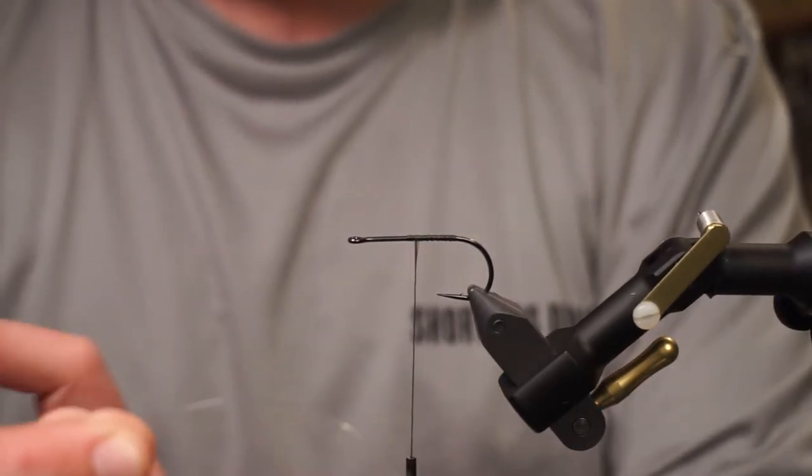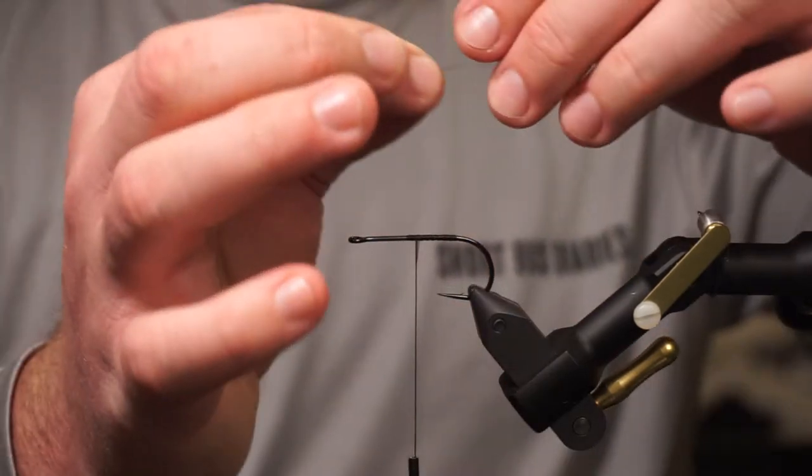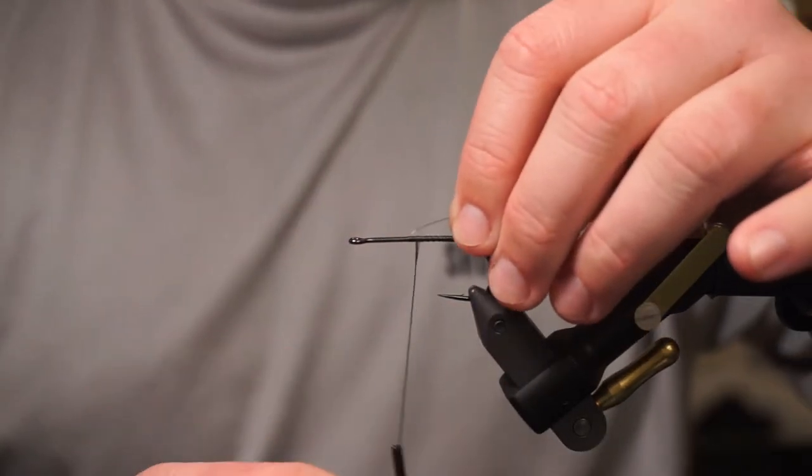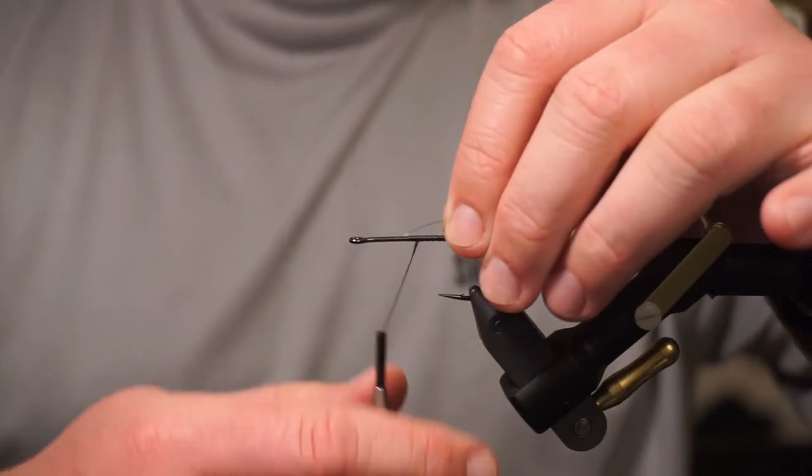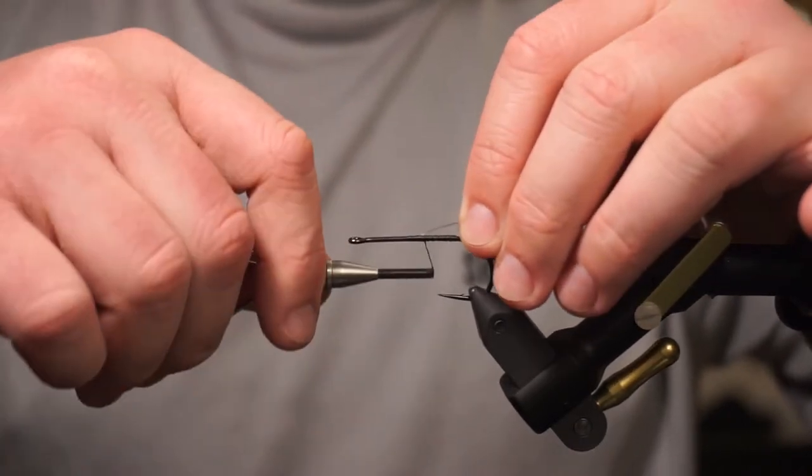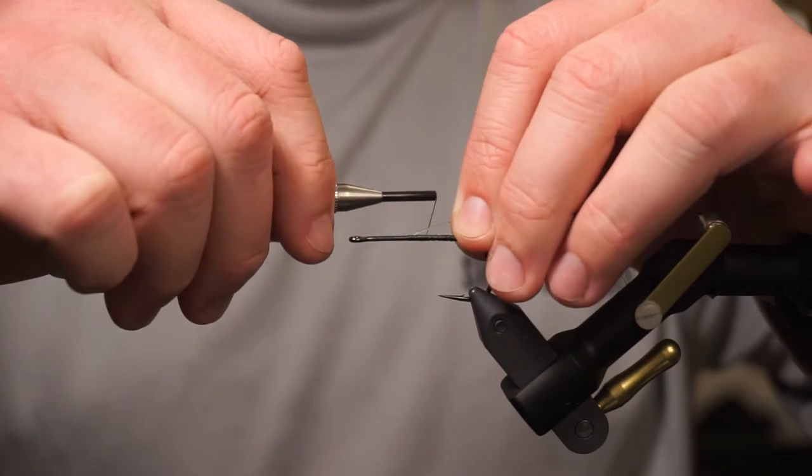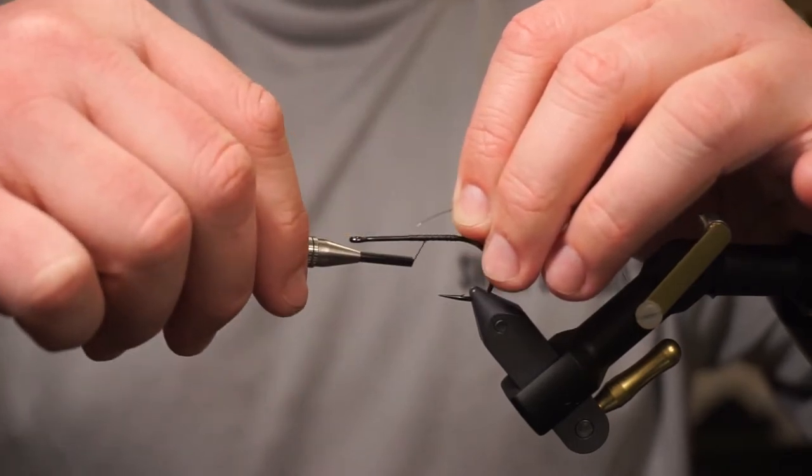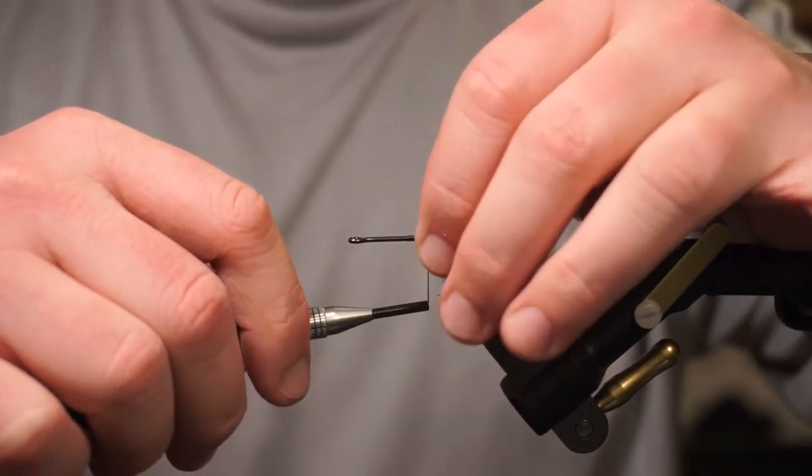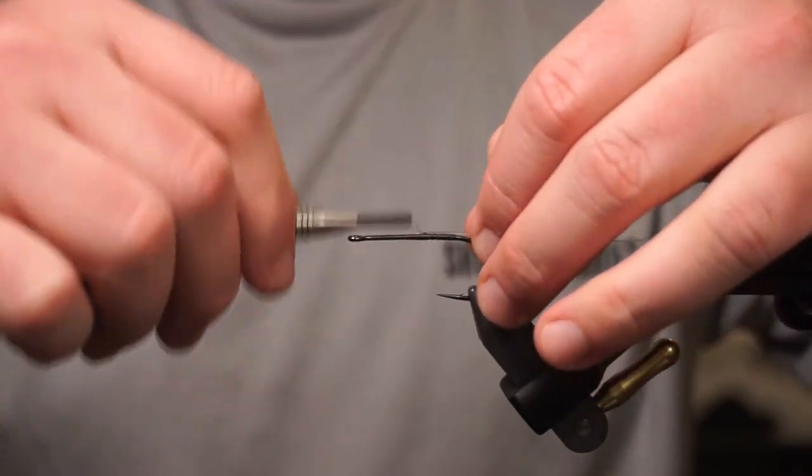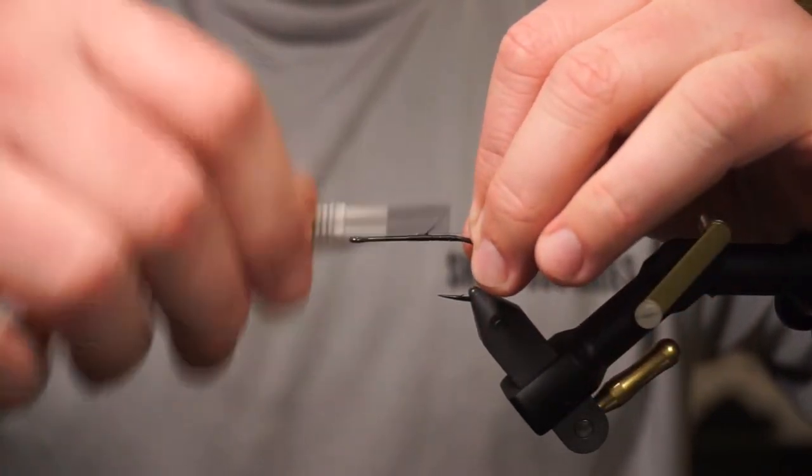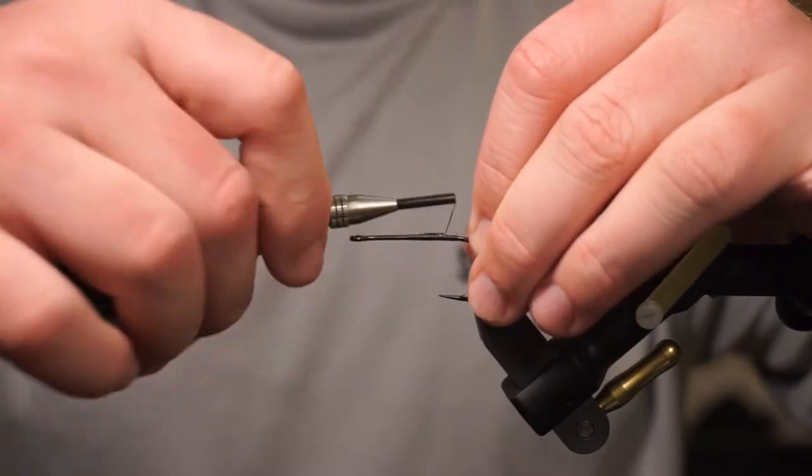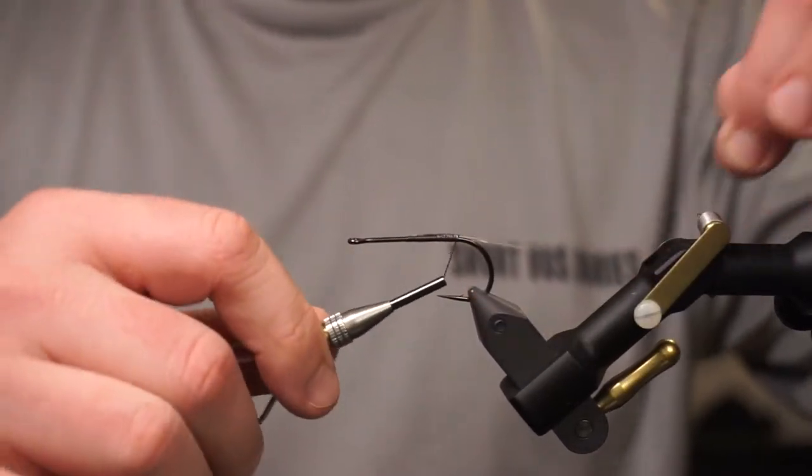All these as you pull them off the spools are going to have a little bit of a curve. You want to have that started out pointing downwards, so we're going to have this guy facing rearwards off the hook with that curve facing down.